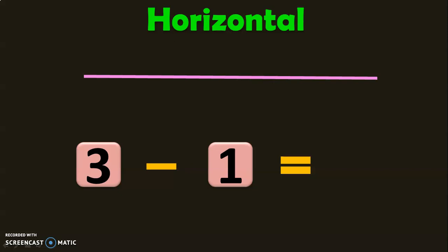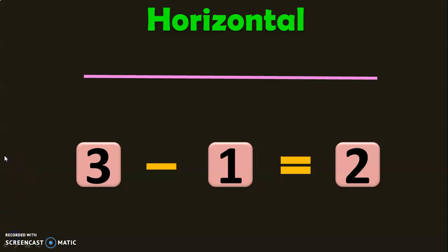What is the answer for 3 minus 1? 3 minus 1 is 2. From the properties of subtraction, we know that when a number is subtracted by 1, you get the before number. So 3 minus 1 is equal to 2, which is the before number of 3. I have dealt with the properties of subtraction in a separate video, the link to which is given below in the description box and also in the iCard section.